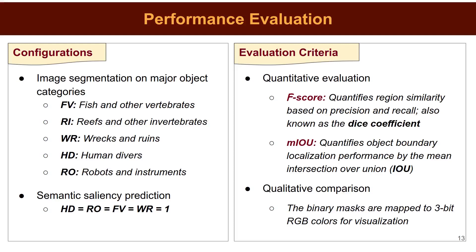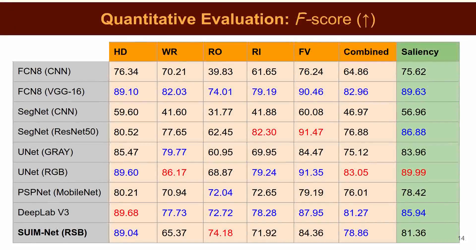The F-score measures region similarity of the predicted pixel labels compared to the ground truth based on precision and recall values. MIOU quantifies object boundary localization performance based on the mean intersection over union measure. We also map the output of each model to RGB space for qualitative evaluation. The top scores for each object category are colored red and the next three best scores are colored blue. Results suggest that although there is no clear winner, UNET on RGB inputs, FCN with VGG encoder, and DeepLab generally perform better than other models. SegNet with ResNet encoder and PSPNet also provide competitive scores, though their performances are slightly inconsistent over various object categories.